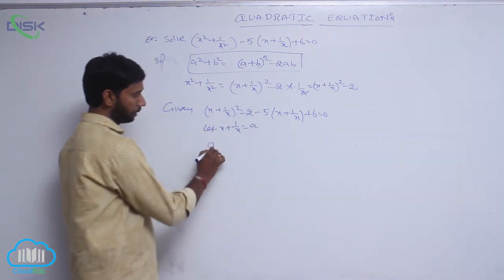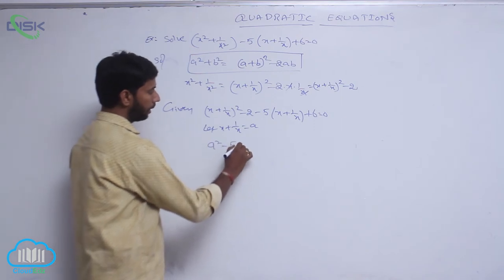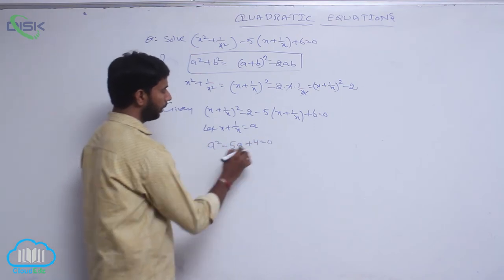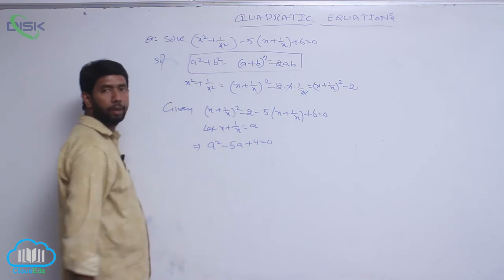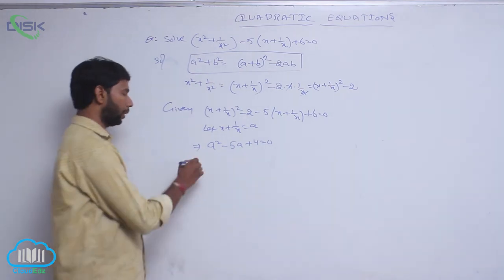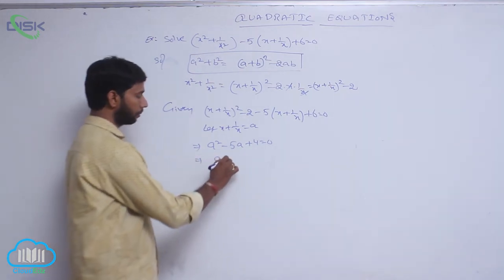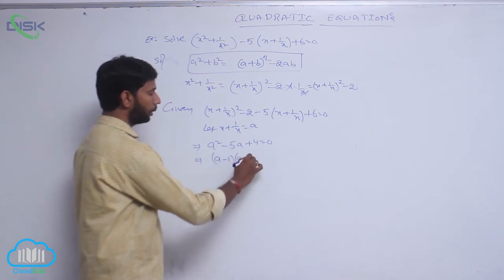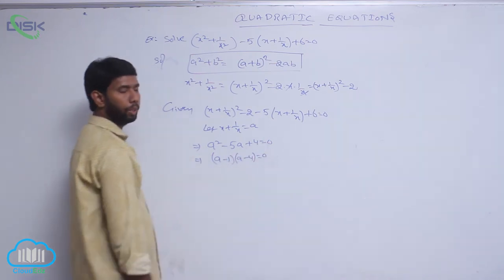That is, a squared minus 5a plus 4 equal to 0. Splitting into factors: a minus 1 into a minus 4 equal to 0.